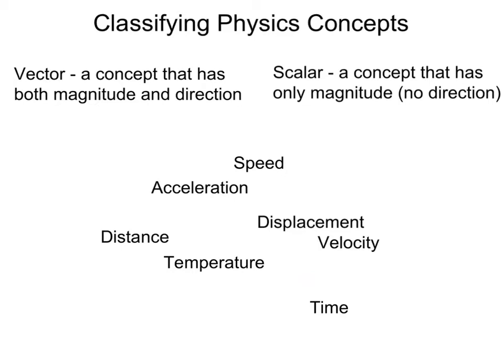Throughout the year, we'll be classifying physics concepts as either vectors or scalars. A vector is a concept that has both magnitude and direction. It answers the questions how much and which way. A scalar is a concept that has only magnitude and no direction, meaning it only answers the question how much.